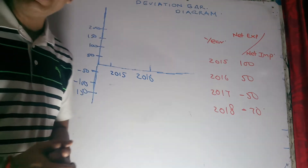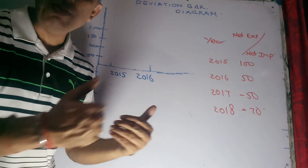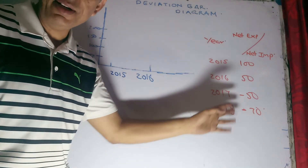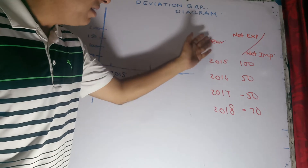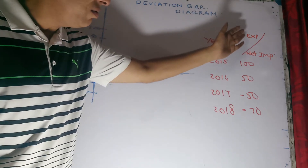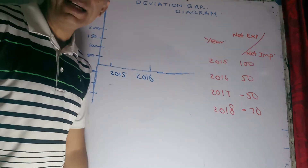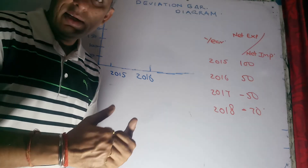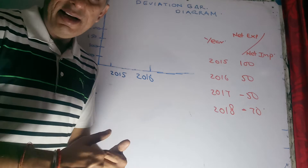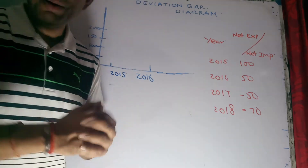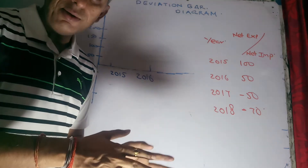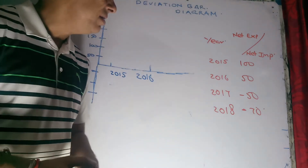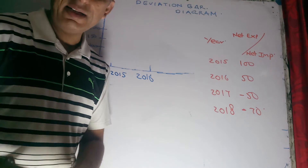For that, you need to understand where it is to be used most. As you can see, there is a little bit of a tabular presentation here. Years are given, and the second column contains net exports and net imports. Generally, a country can either have exports over imports in a year, or imports greater than exports in a year. That is the typical pattern.